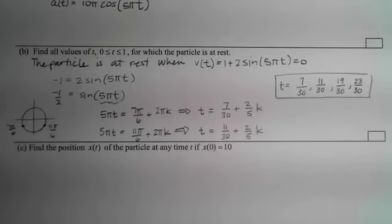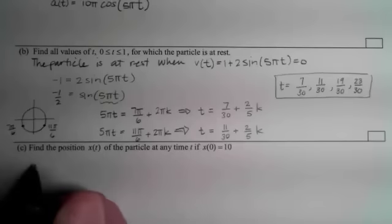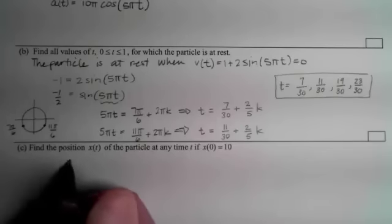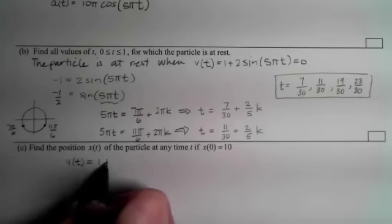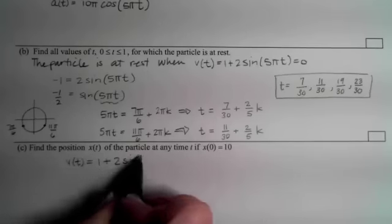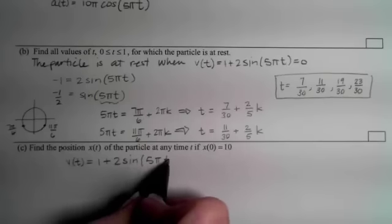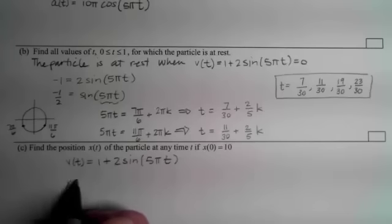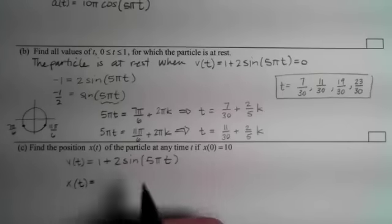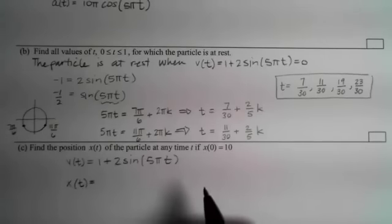Last part C, we want to find the position of the particle at any time given a value on the position curve. In this case we're going backwards. We know our velocity is 1 + 2sin(5πt). In order to find the position, we need to take the anti-derivative.